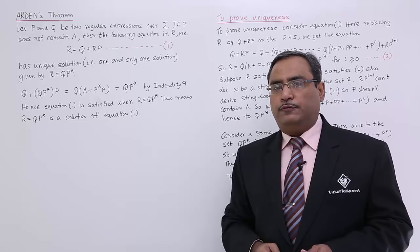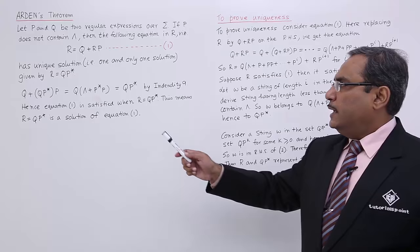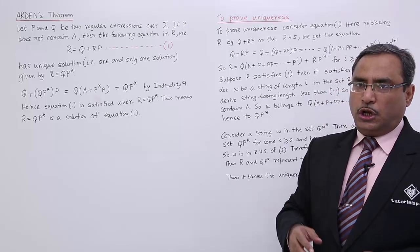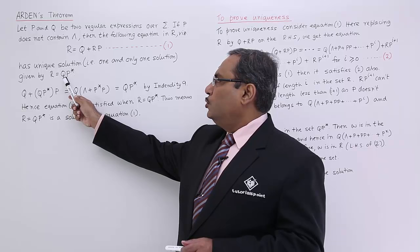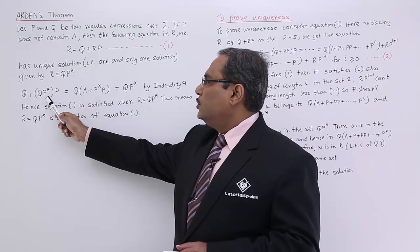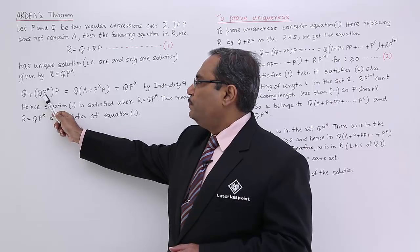Now we start with the proof. We have Q + RP, and if R = QP* is the unique solution of this equation, then we can replace R by QP*. So writing Q + RP with R replaced by QP*, we get Q + QP*P.